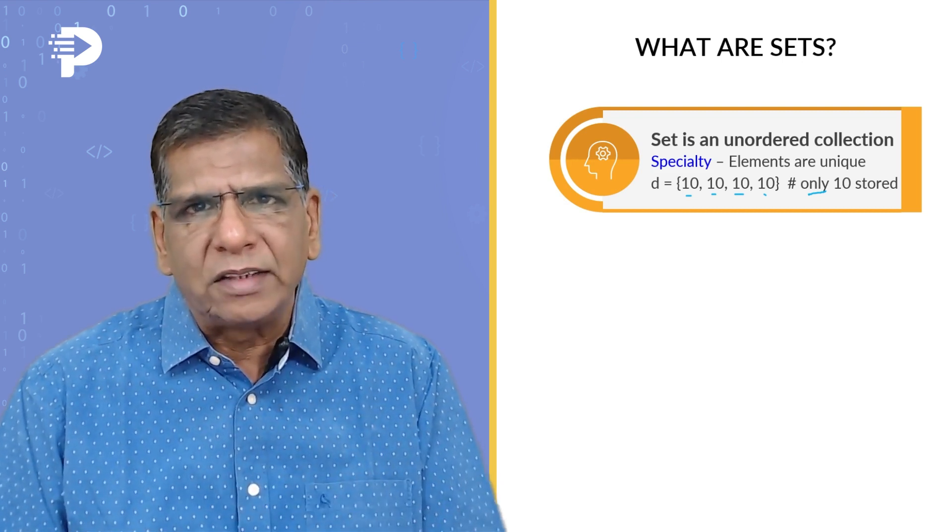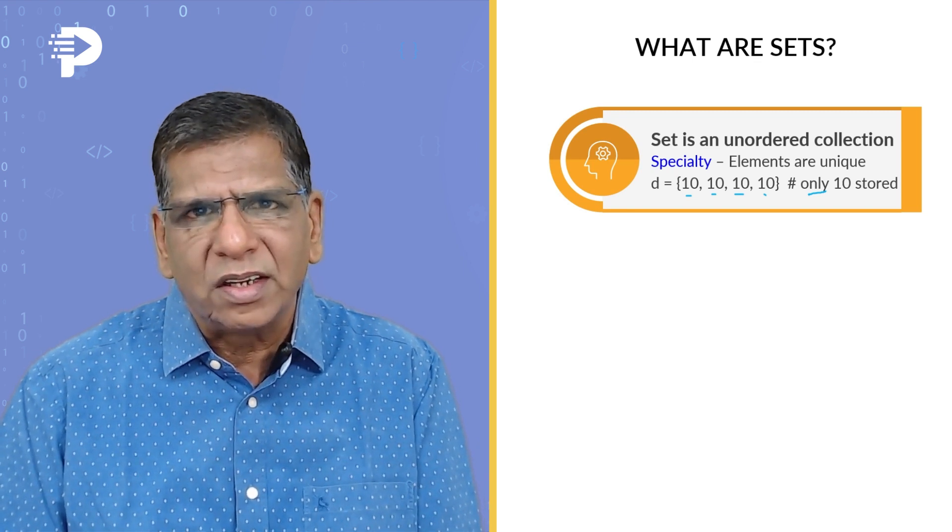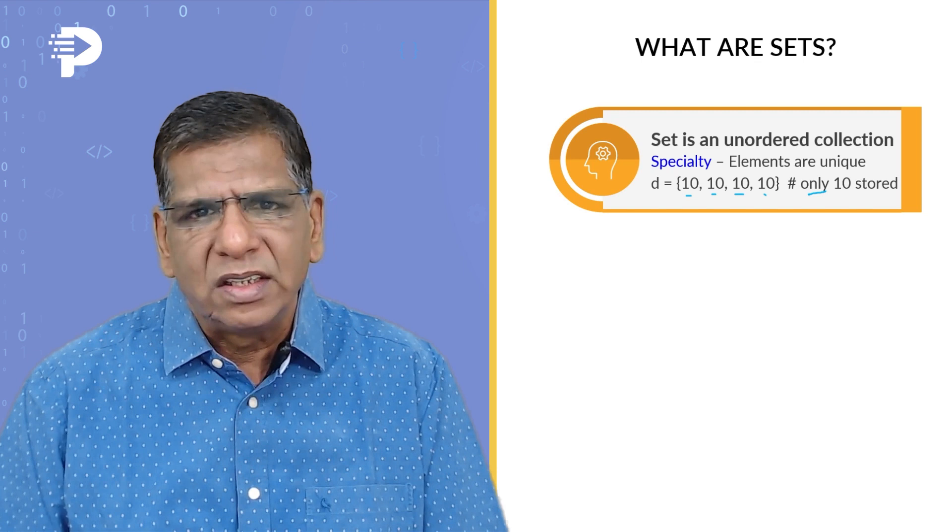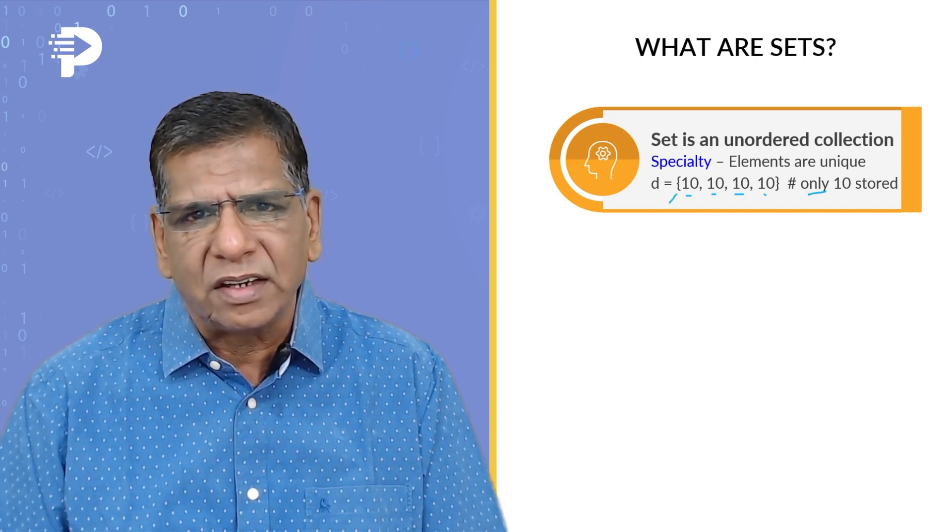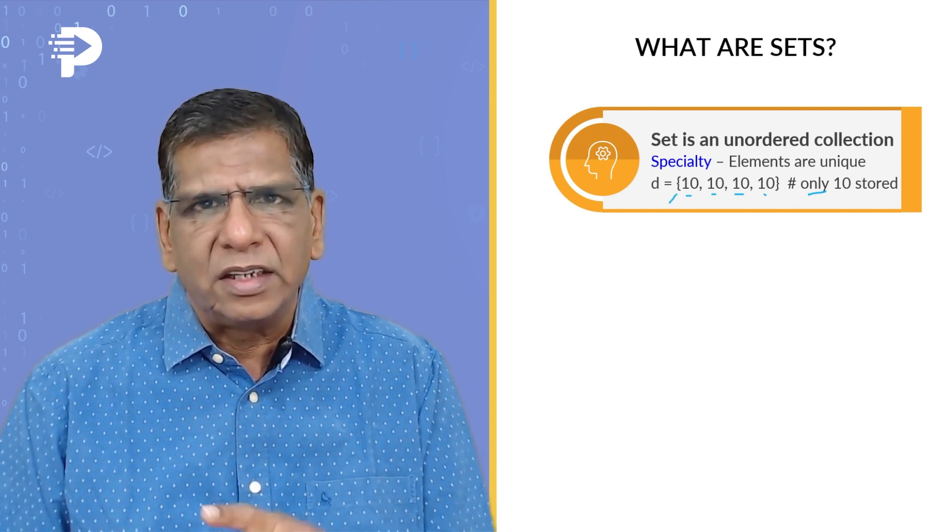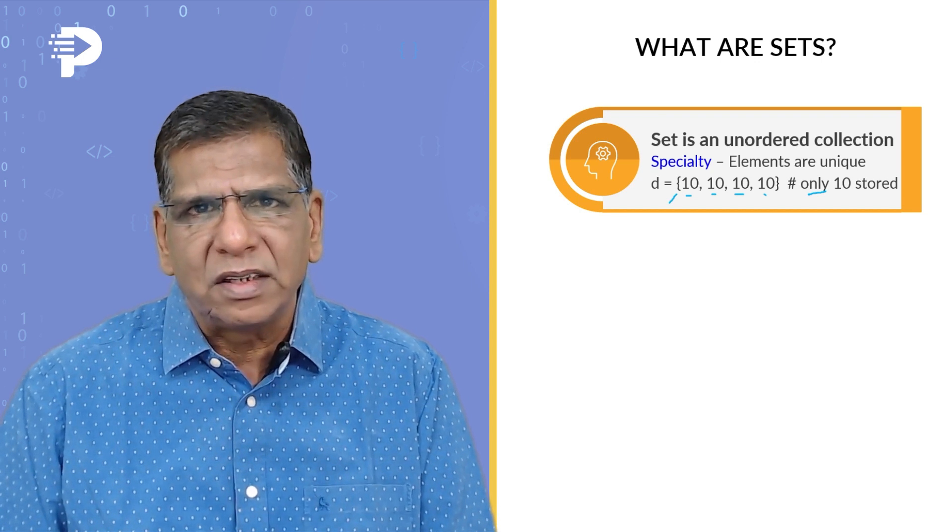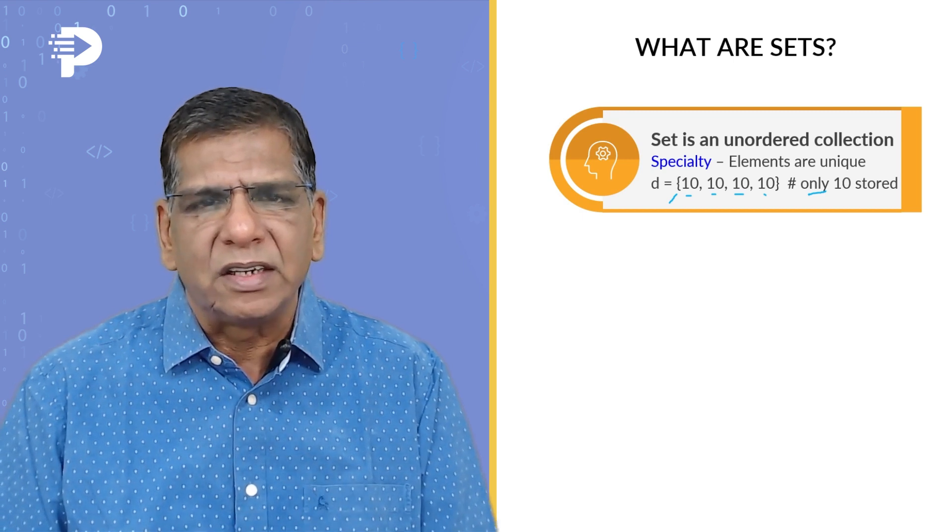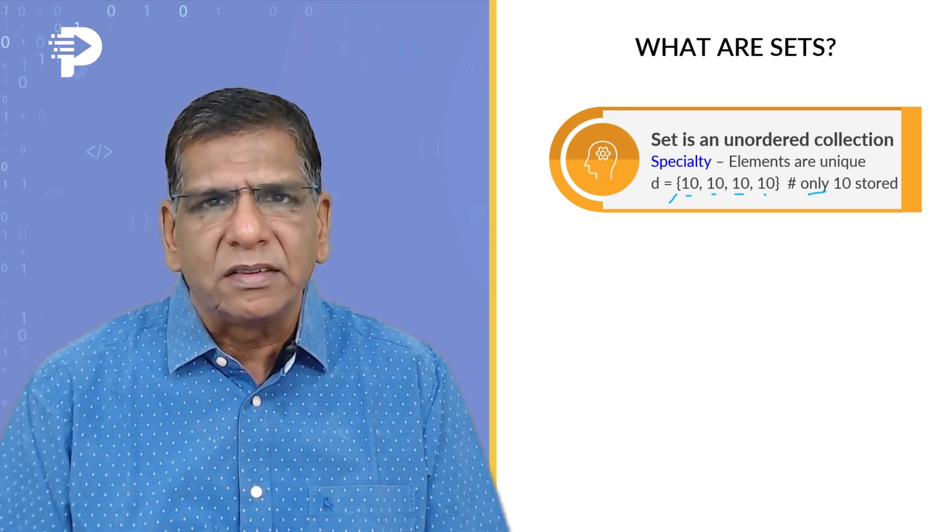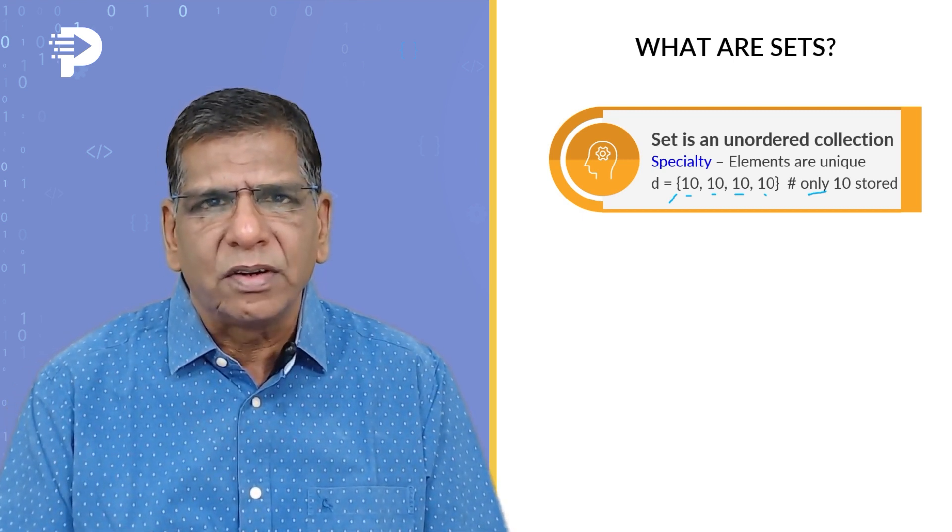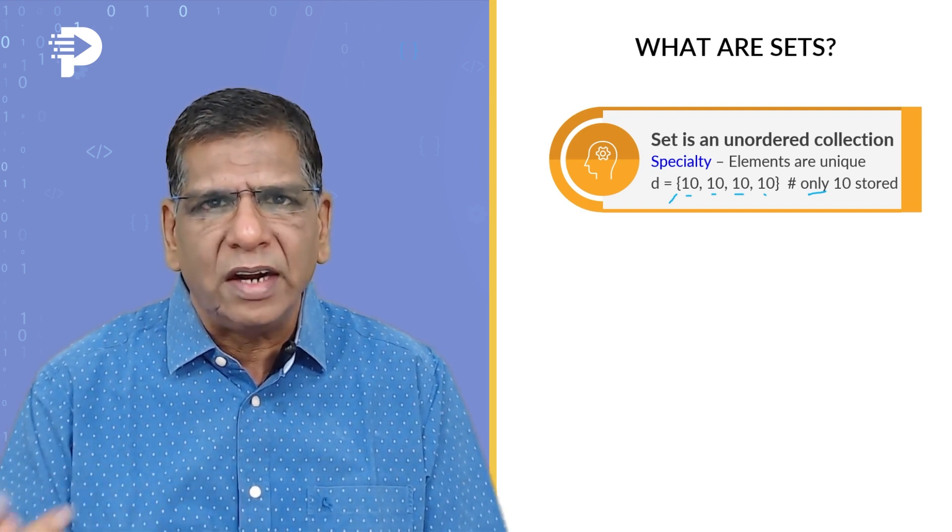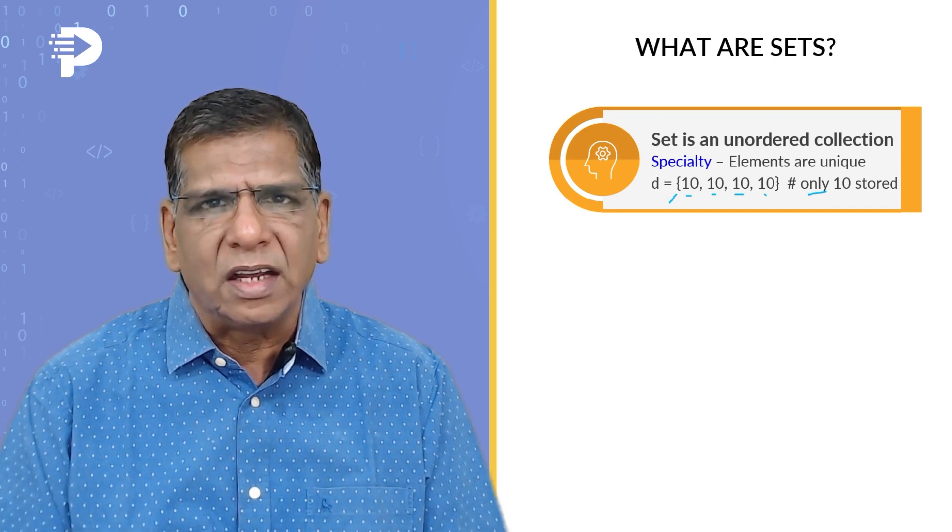The easy way to identify a set is using the braces associated with the values. These braces tell us that it's a set. Had it been brackets, it would have become a list. Had they been parentheses, it would have become a tuple. Braces indicate that it's a set. Set is nothing but a collection of unique elements where insertion order and access order are likely to be different.